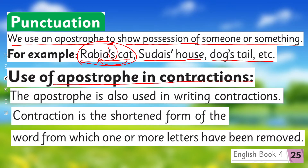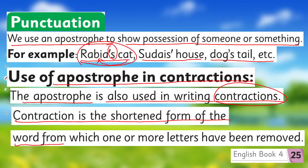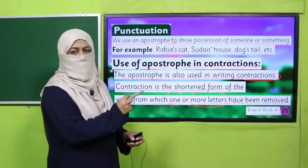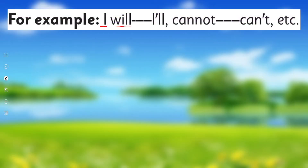The apostrophe is also used in writing contractions. Contraction means to write in a shorter form. A contraction is the shorter form of a word from which one or more letters have been removed, and we put an apostrophe in their place. For example, 'I will' — we omit the 'w' from 'will' and put an apostrophe, and it becomes 'I'll.' 'Cannot' becomes 'can't.'